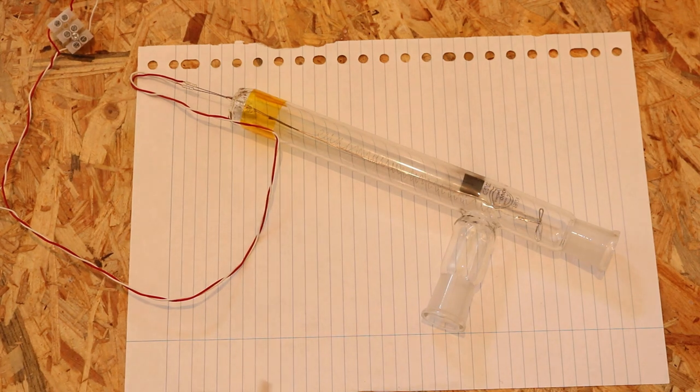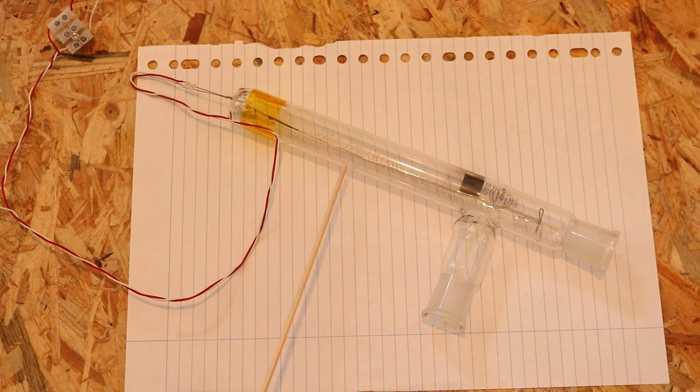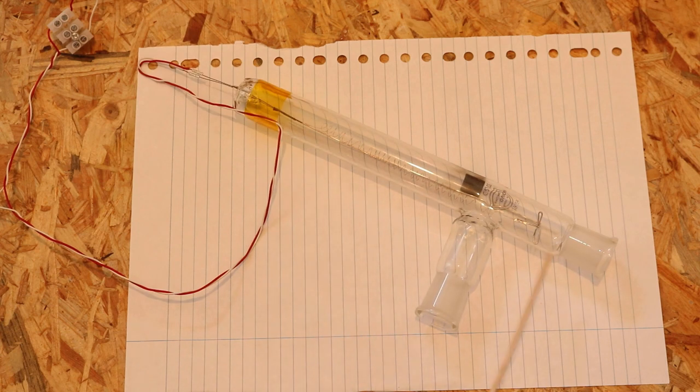The vacuum gauge itself is pretty simple. We just have a glass body and in there we have a filament supported with some thicker wire.